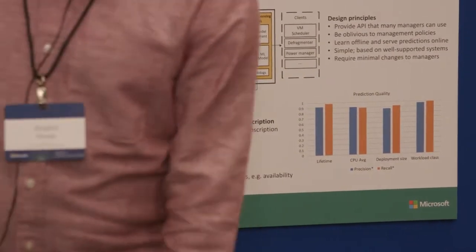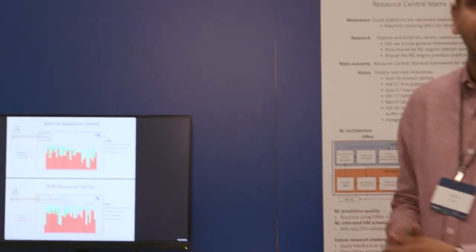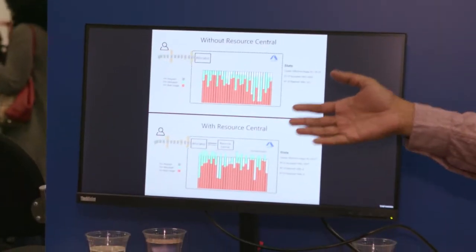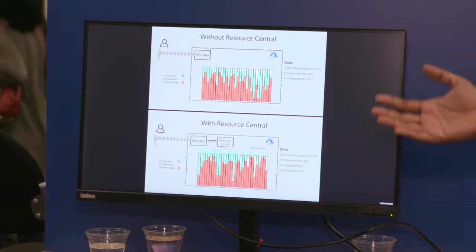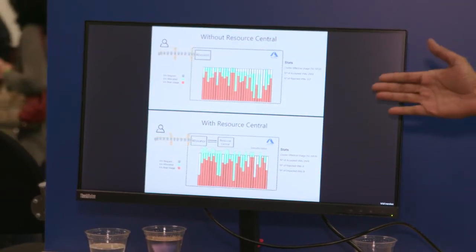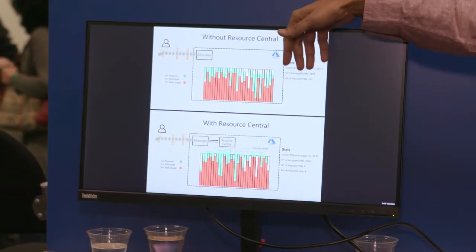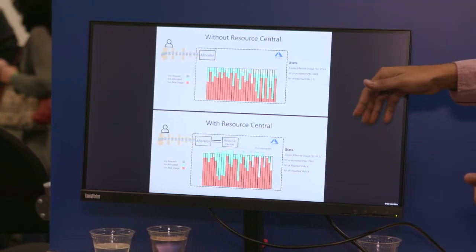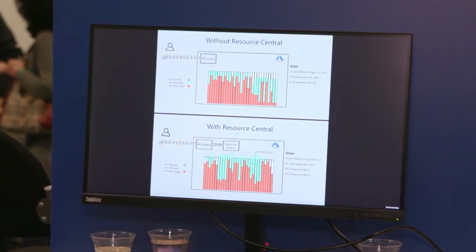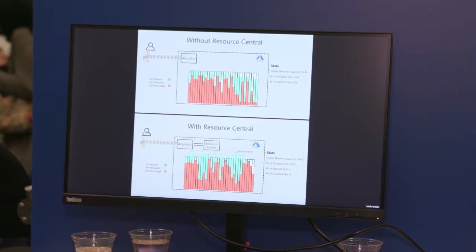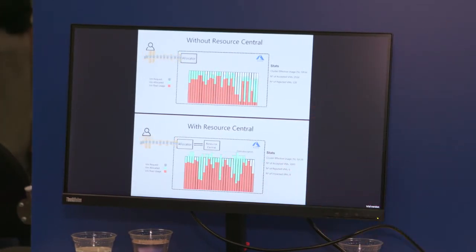Now we have a small demo here which shows VM scheduling in Azure using Resource Central and without using Resource Central. As you can see, without using Resource Central, there will be a high probability of rejections of workloads because of the fixed capacity of the VMs.